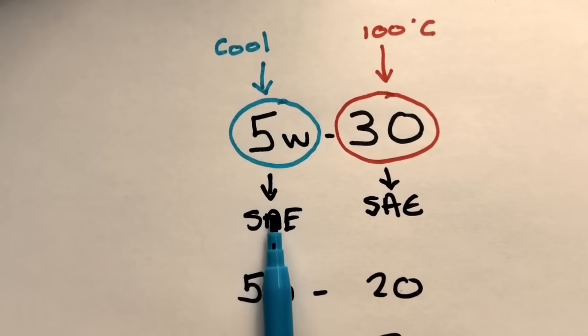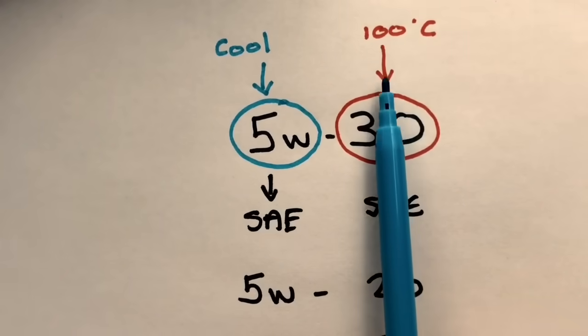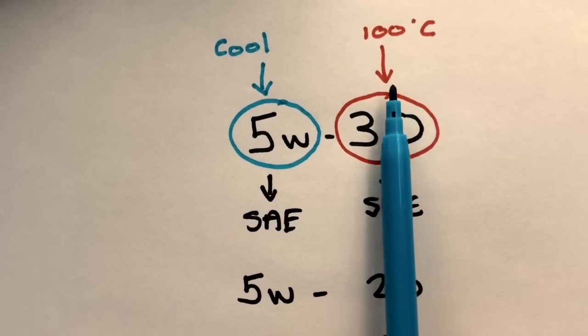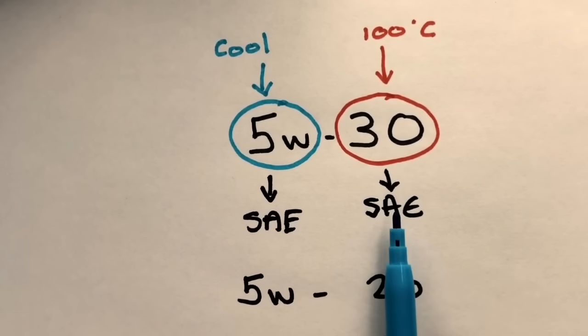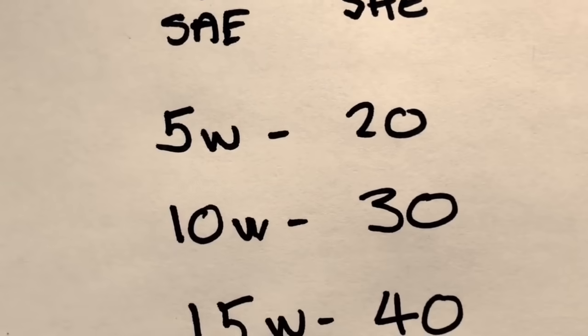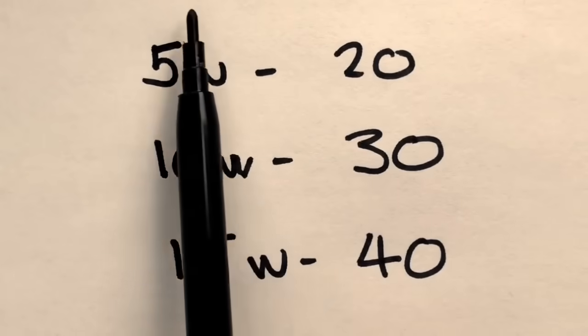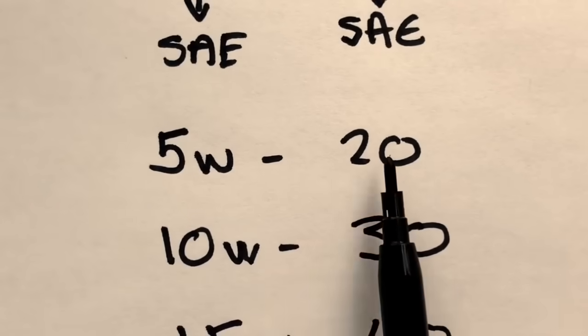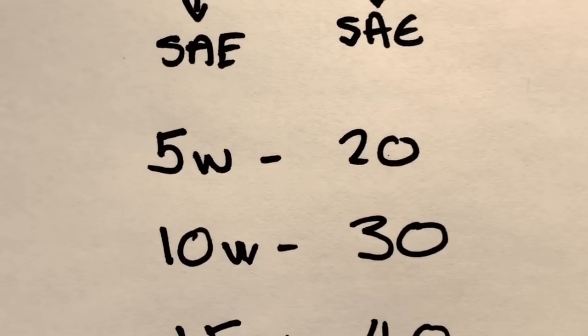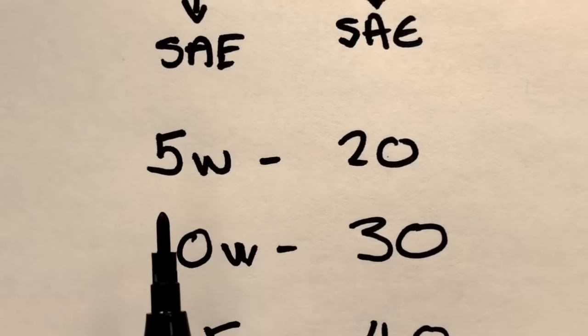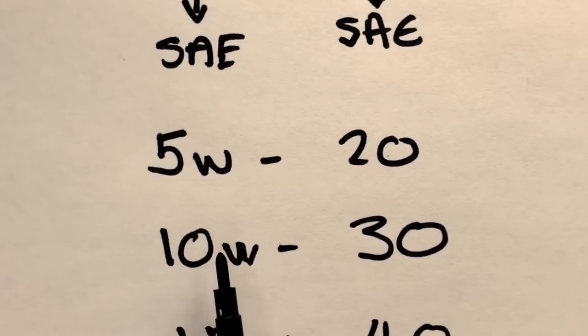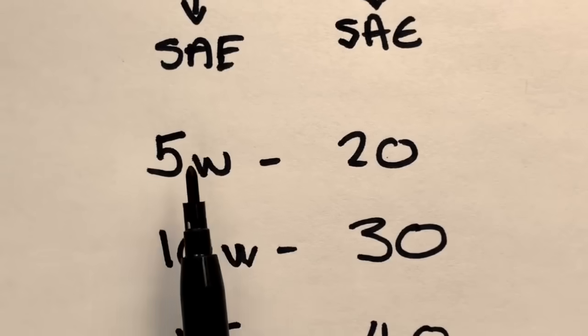So we can see it acts like an SAE 5 when it's cool. When it gets up to temperature at 100 degrees centigrade, it acts like an SAE 30. And it also relates to these other numbers here. Any numbers that are found on an oil can, now you can work out what they are. The second number always relates to the viscosity of the oil at 100 degrees centigrade, and these figures with the Ws always relate to the viscosity of the oil when it's cool.